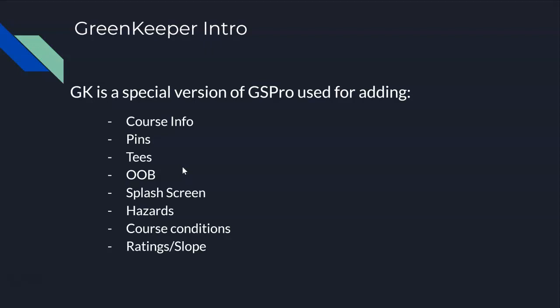What does Greenkeeper do? You use Greenkeeper to add information about your course — for example, the name of the course, the elevation, and the author. You add your pins on your greens, so your pin placements. You add your tees — you made your tee boxes in Unity, but you actually assign their locations inside Greenkeeper. You define an out of bounds, which is a requirement, so you circle an out of bounds around the outside of your course.